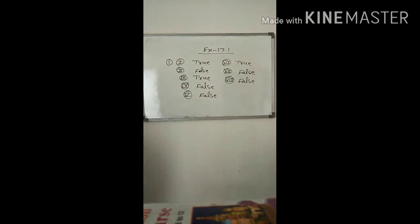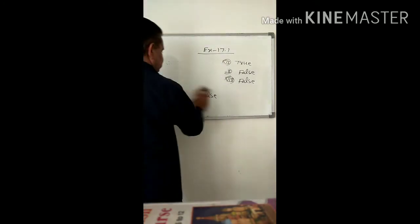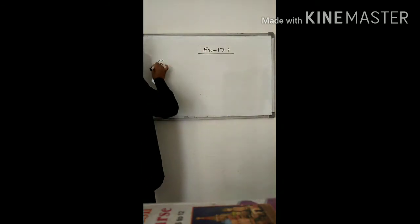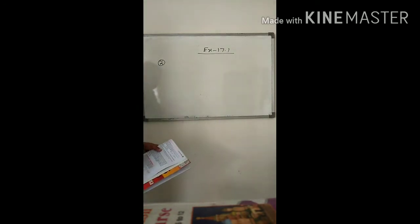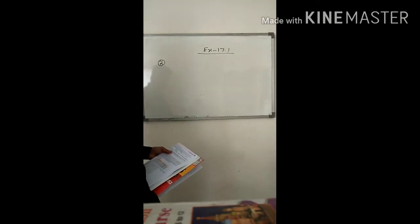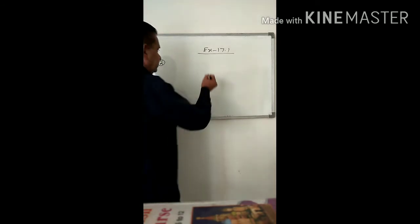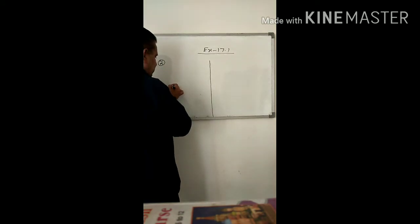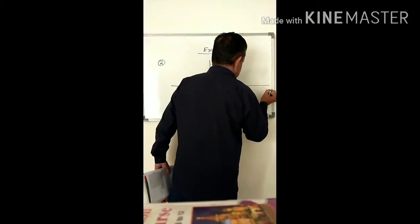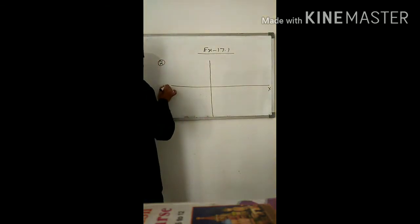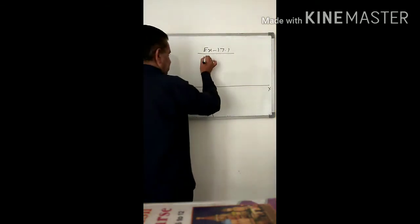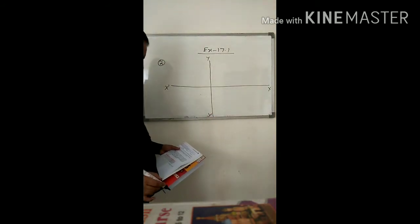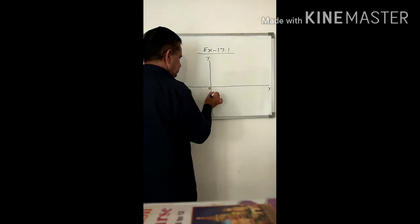Now look at question number 2. Plot the following points on the same graph paper. You have to make this question on the graph paper. Just like this — this is x and this is x-dash, this is y and this is y-dash. This is origin zero.